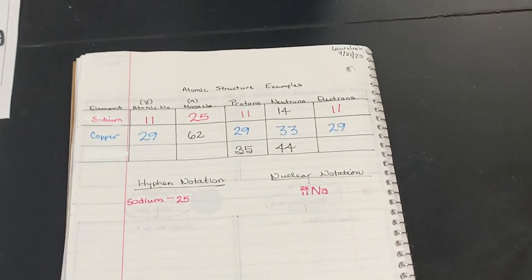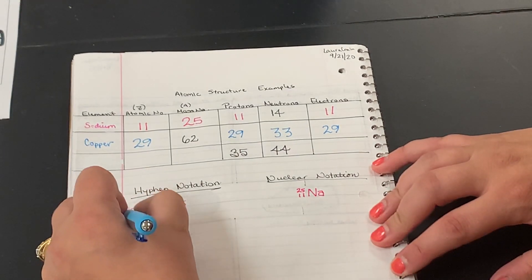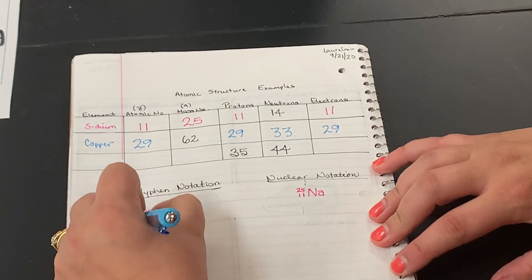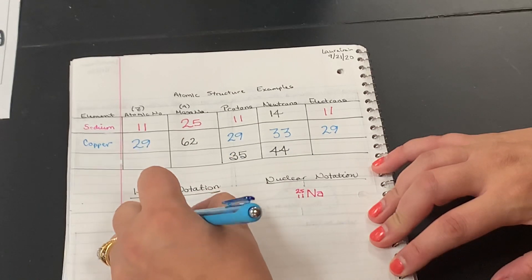Alright, let's do our notation here. So for the hyphen notation, we take the name of the element, which in this case is copper. Then we put a hyphen, and then we need the mass number, which they've told us is 62.